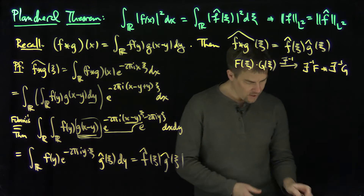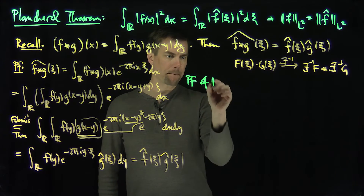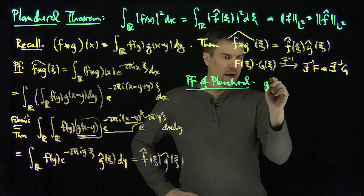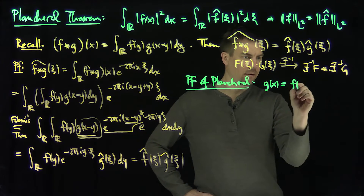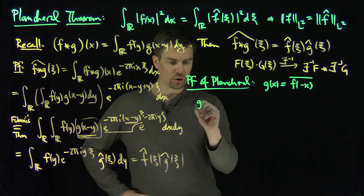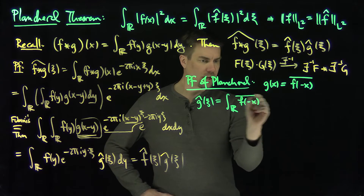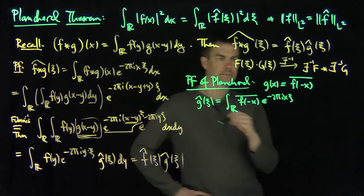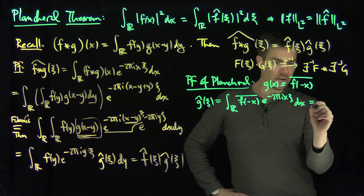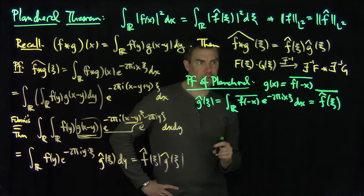Now this will help us prove the Plancherel theorem. For the proof of Plancherel, we consider a function g(x) = conj(f(−x)). What is the Fourier transform of g? We have ĝ(ξ) = the integral over ℝ of conj(f(−x))·e^{−2πi x·ξ} dx. Pulling the conjugate out and changing variables, we see this is conj(f̂(ξ)). So ĝ(ξ) = conj(f̂(ξ)) — that's the Fourier transform rule for this choice of g.